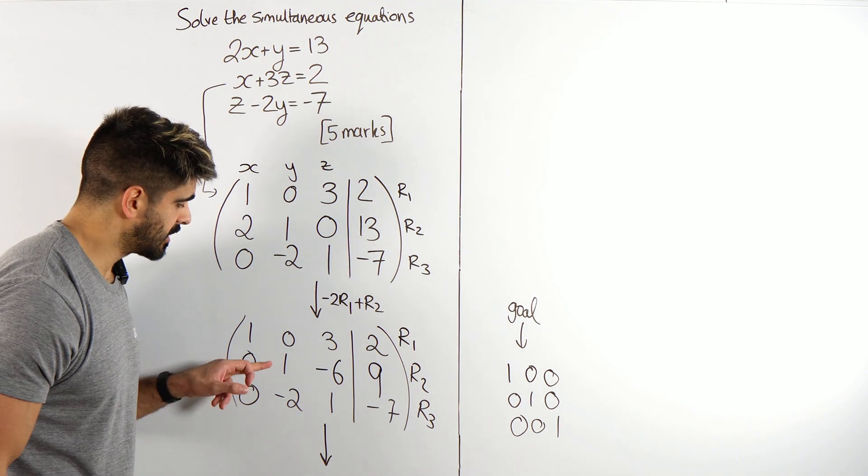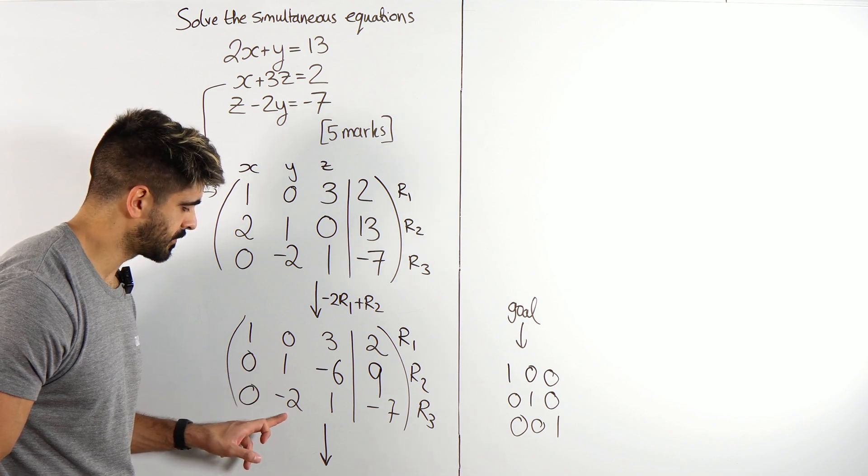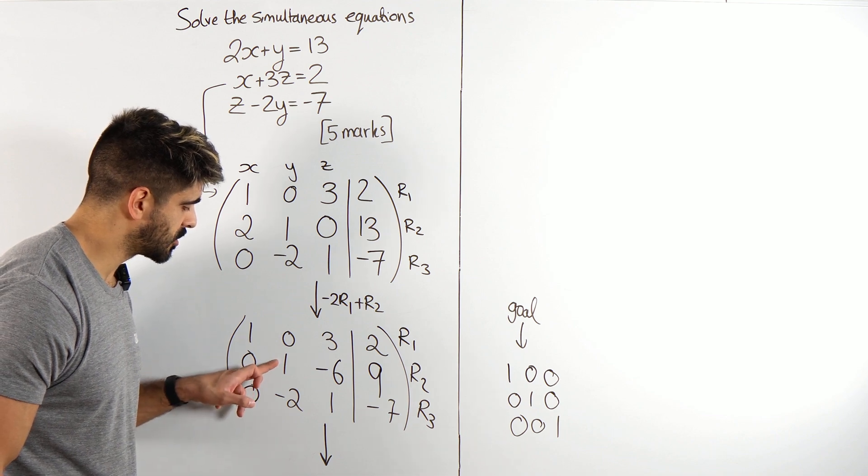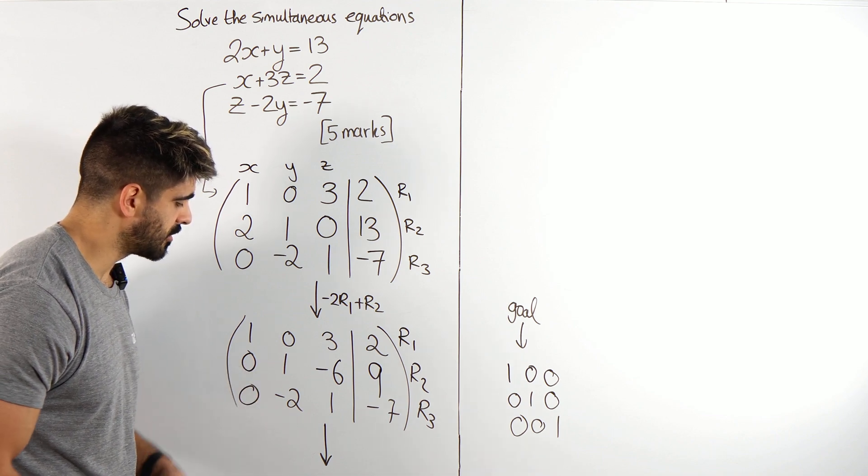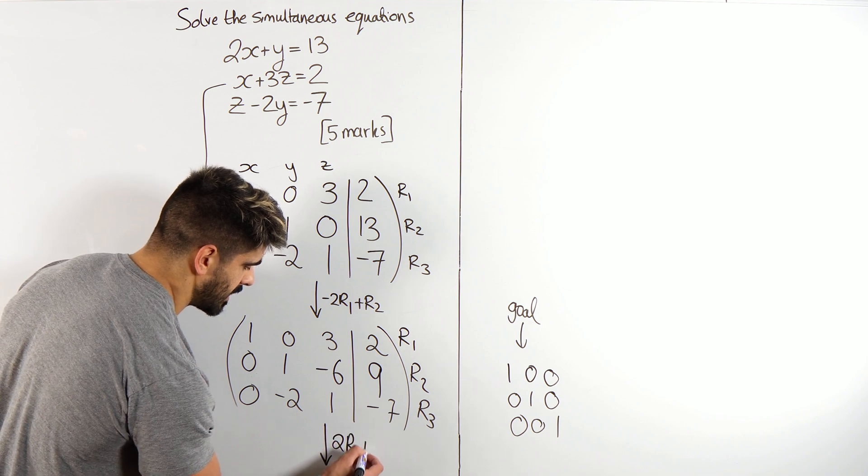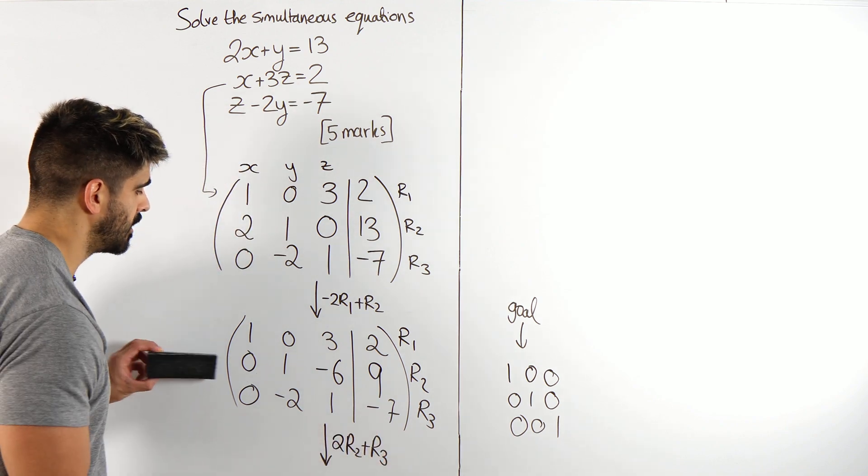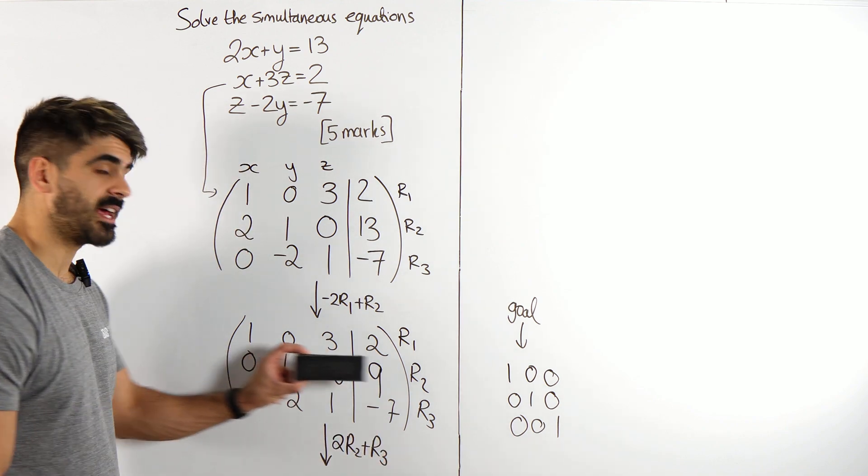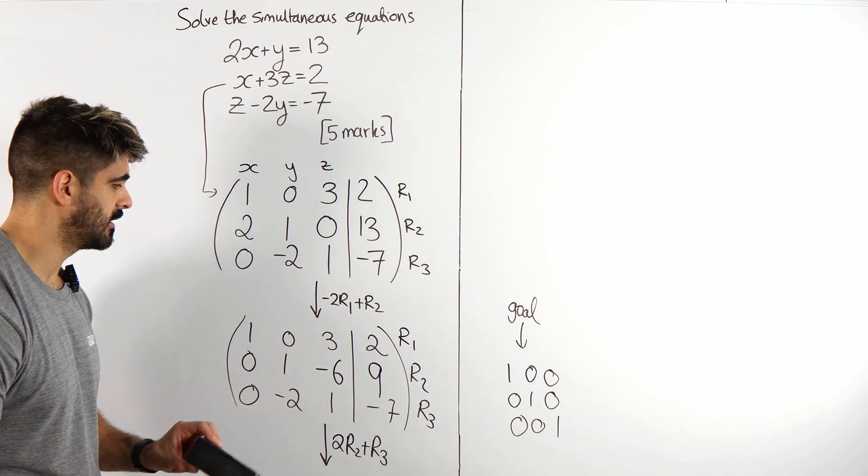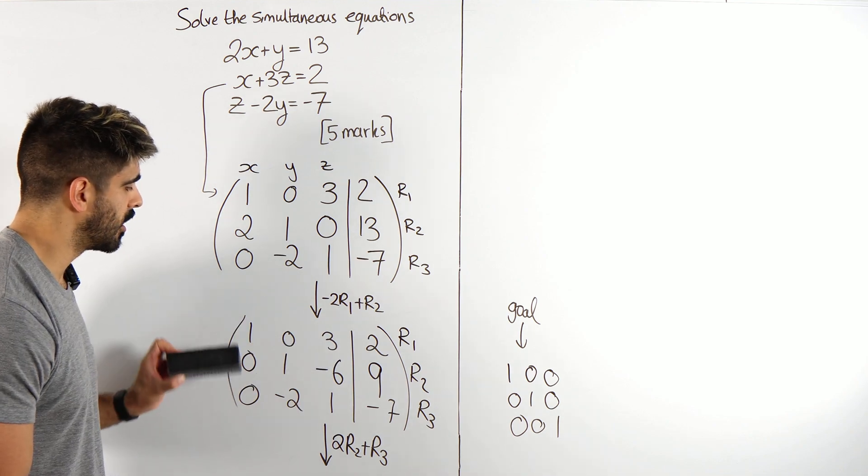So row 2 is now going to be our pivot. Now, I'm going to write what I'm doing here, then we're going to do our matrix up here. How do I make this a 0? I'm going to times this by 2 and add it to this. 1 times 2 is 2, minus 2 is 0. So I'm going to do two lots of row 2, then add it to row 3 this time. Now remember, row 2 is the pivot, so that's not going to change. And in fact, I'm not doing anything to row 1 either. So I can just rewrite row 1 and row 2.